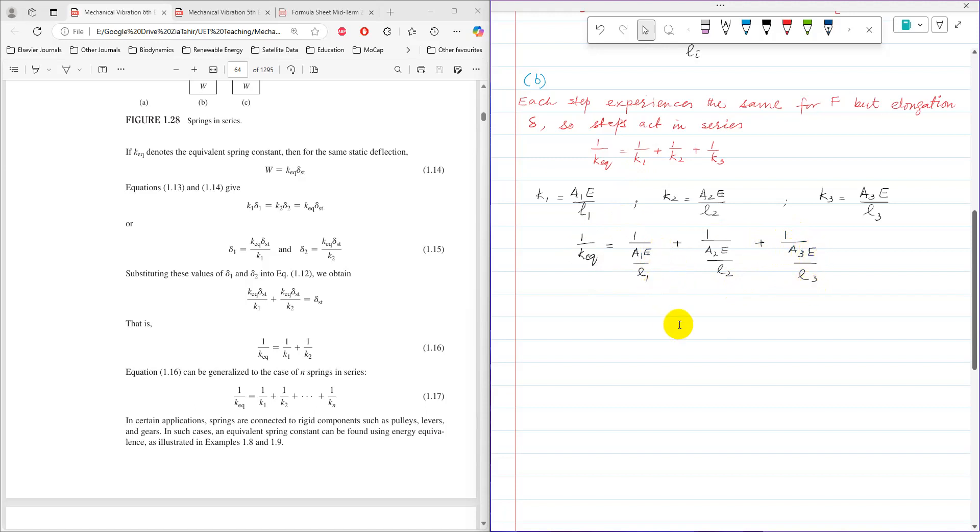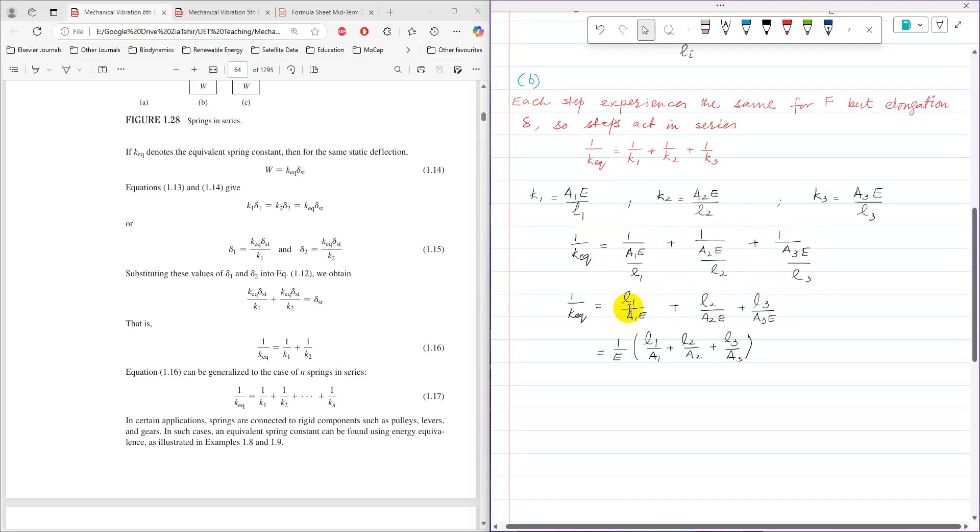It can further be simplified as L1 over A1E plus L2 over A2E plus L3 over A3E, and E can be taken as a common factor, leaving L1 over A1 plus L2 over A2 plus L3 over A3. So now it is possible to make the denominator the same and further simplify. So it can be further simplified by making the denominator the same.